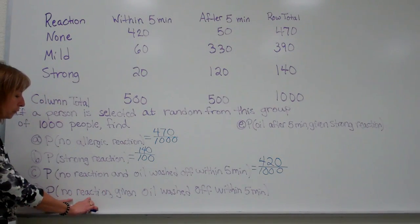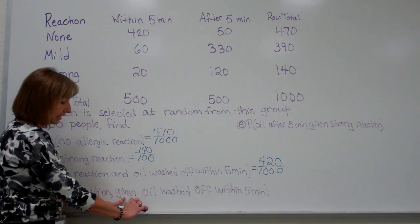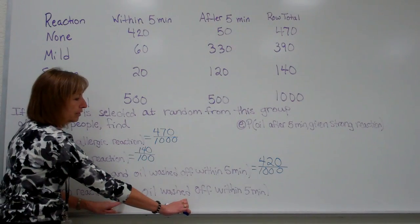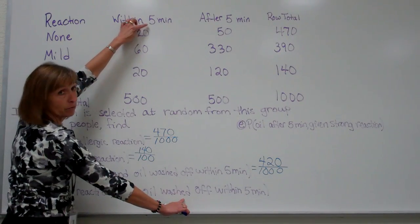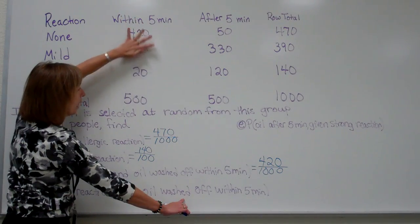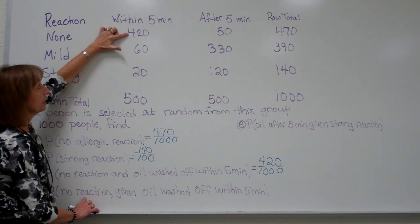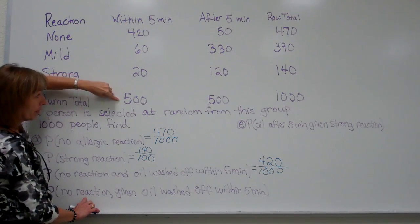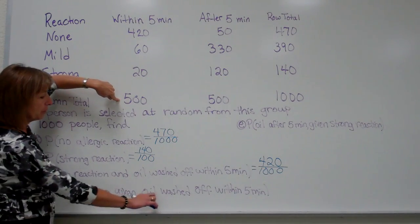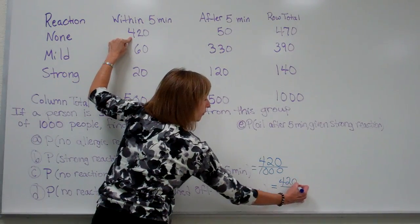So here, the probability of no reaction given that the oil is washed off within 5 minutes. Look at what's after the word given. Given is the information of the group you're going to look at. Those where the oil was washed off within 5 minutes. So I find within 5 minutes, and I'm just looking in this column. Now what's the probability just in this column that you have no reaction? So it's 420, that's the no reaction, out of the 500. With the given information, the conditional information, you have to just be within that given part. So this probability answer is 420 over 500.